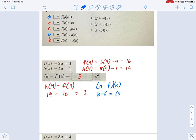h minus f is going to be equal to, well, let's see. h is 5x minus 1, and f is 3x plus 4. So you could have said, 5x minus 3x is 2x. Negative 1 minus 4 is negative 5.